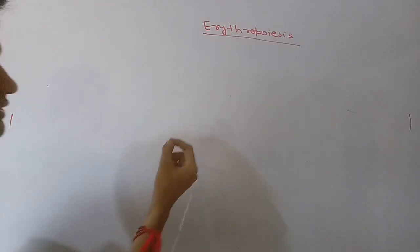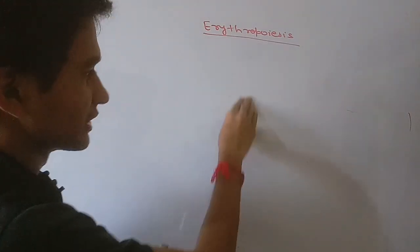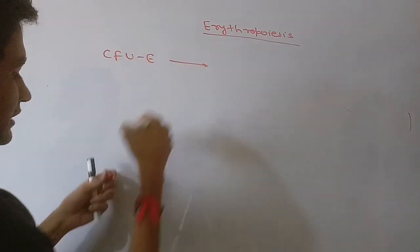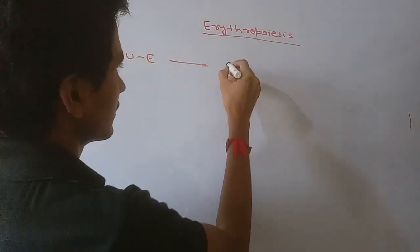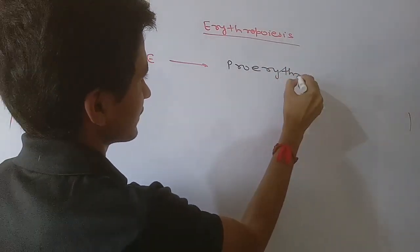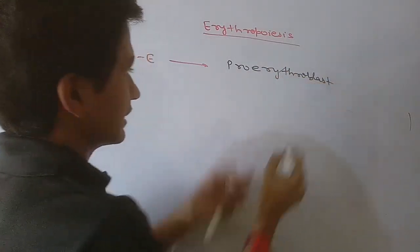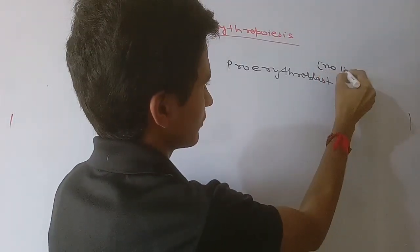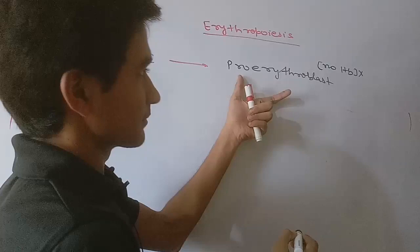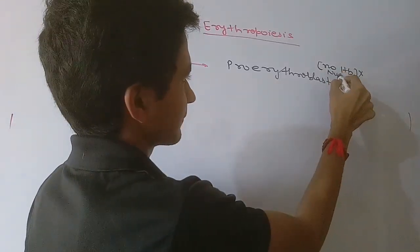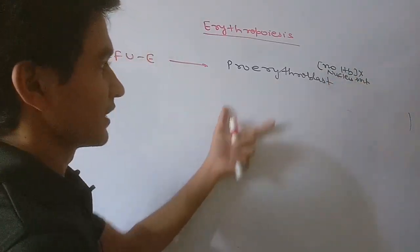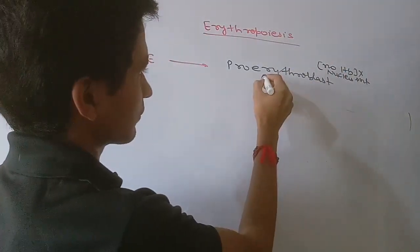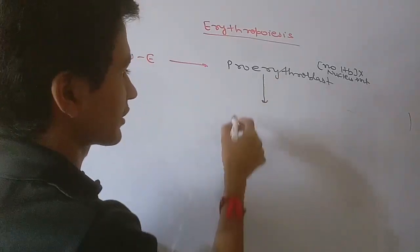From the Colony Forming Unit Erythrocyte, the first stage formed is the pro-erythroblast. In this stage there is no hemoglobin present in the RBC. The nucleus is present in the pro-erythroblast and the cell size is larger because it has to accommodate the nucleus.